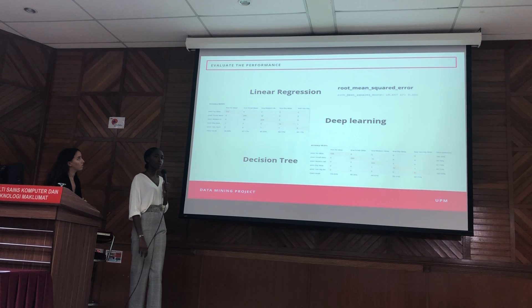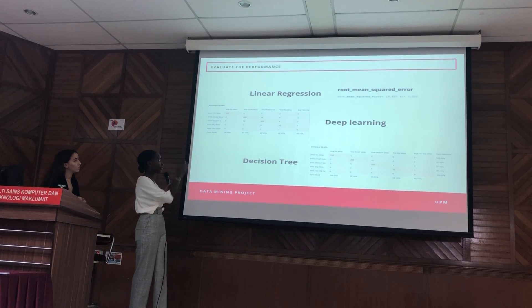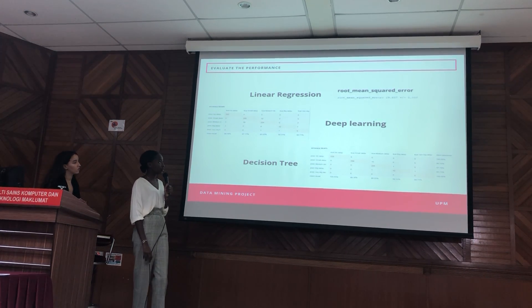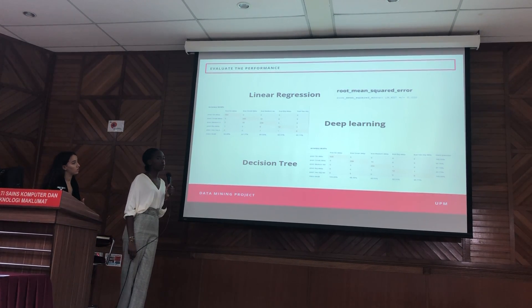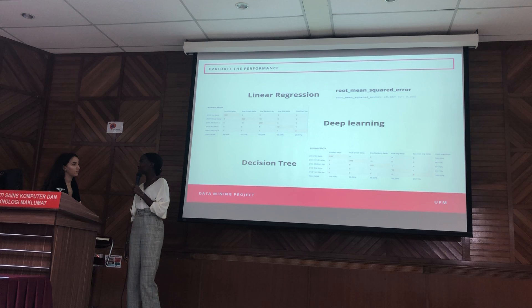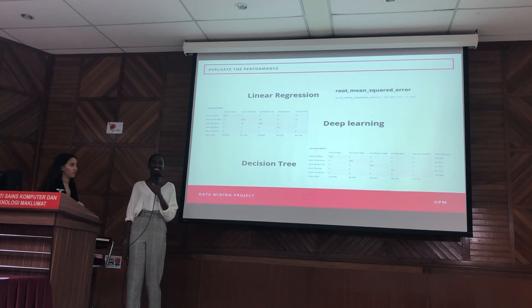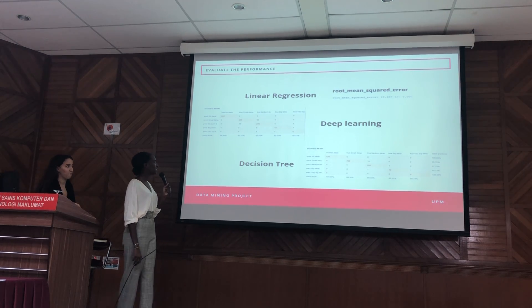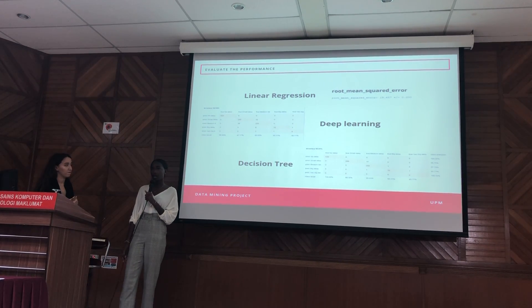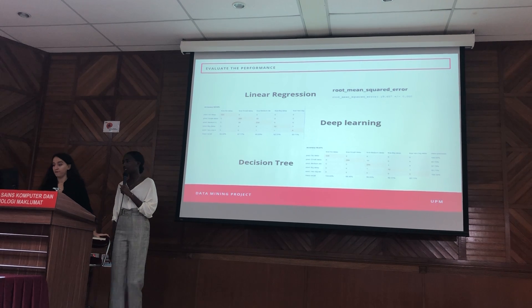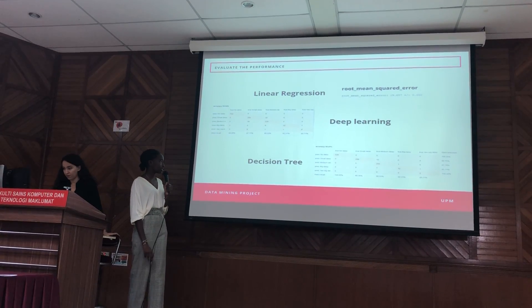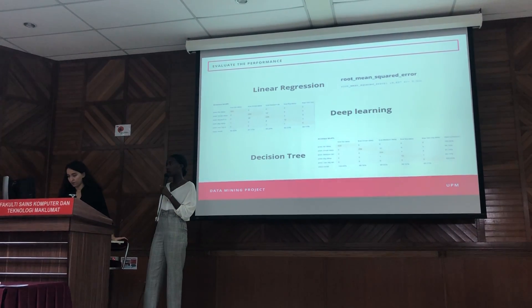After building the three models, we measured their performance. We first used R Studio for the linear regression but were not able to get the best performance, so we switched to RapidMiner and obtained better results — you can see the Root Mean Square Error above. For deep learning on the delay category, we achieved a very high performance of 92%. Finally, with the decision tree we obtained 98% accuracy.